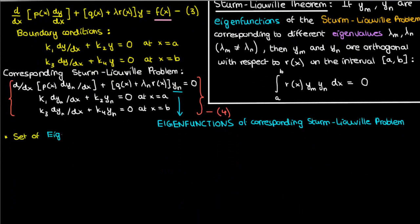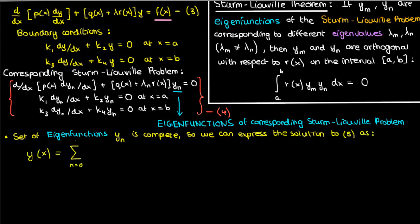Because the set of eigenfunctions is complete as we mentioned earlier, we can express the solution y to our non-homogeneous ODE as a linear combination of these eigenfunctions y sub n.